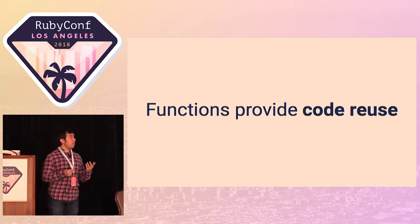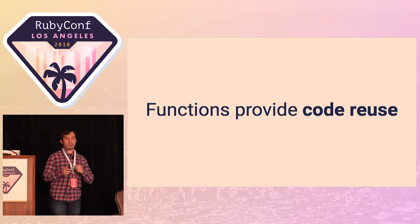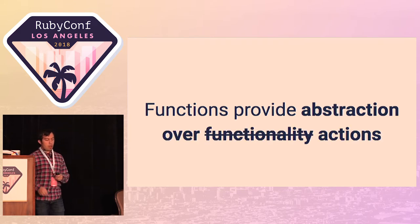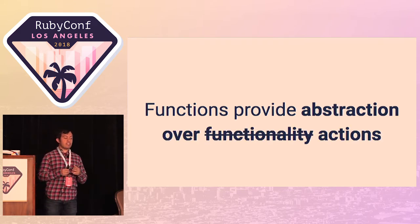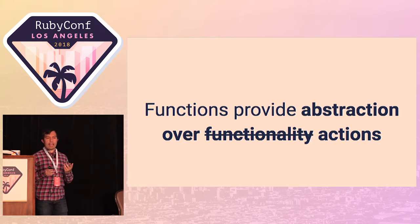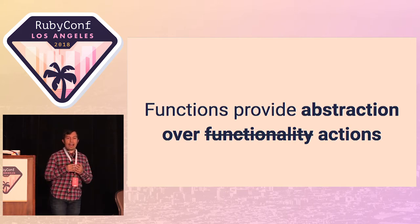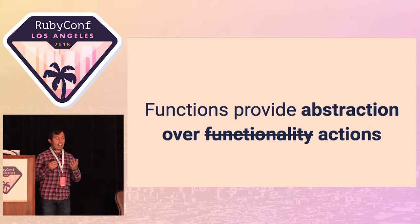We use functions to provide the ability to reuse code — the same blocks of code in one spot that can be called from multiple areas. But they also provide an abstraction over actions. I can call the order_pizza function and I really don't need to know what happens under the hood. Is Ruby firing up a pizza oven? I don't know. I don't really care. I just know that if I call the order_pizza function, I will get a pizza.